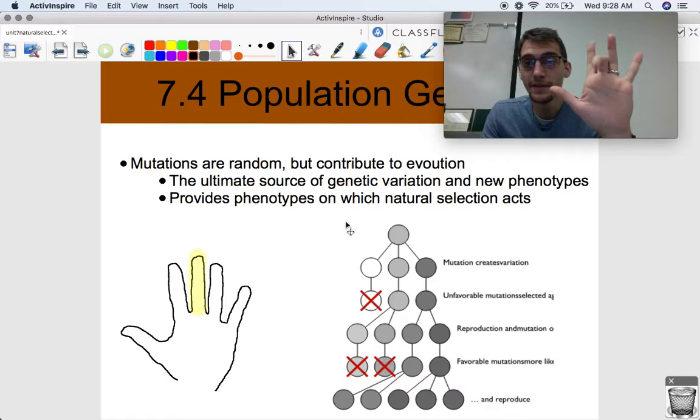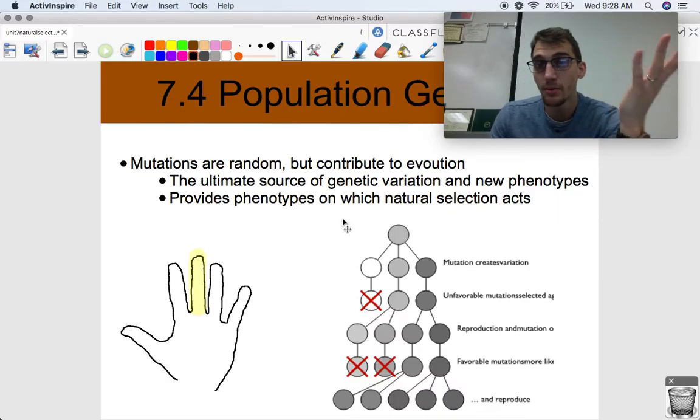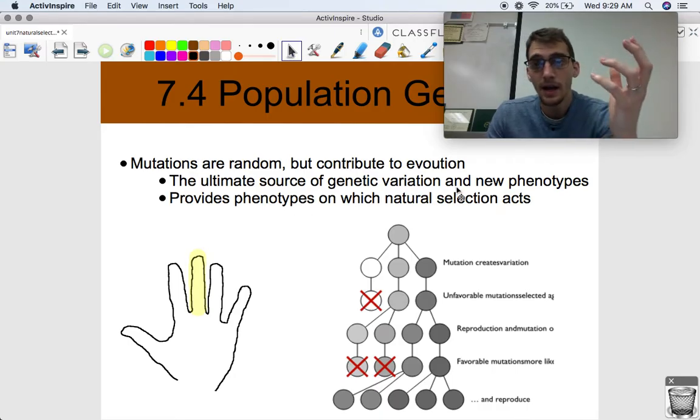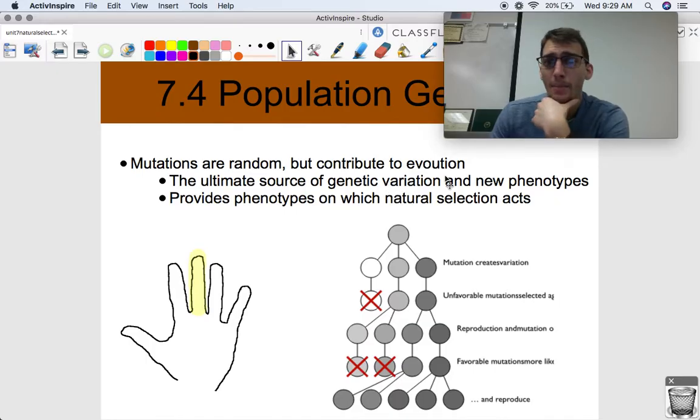Mutations. We use the middle finger to represent mutations because mutation and middle start with the same letter. But mutations drive changes in allele frequencies. They're the basis of genetic variation. And remember, genetic variation has to be there in order for natural selection to occur. But mutations themselves change allele frequencies. They change allele frequencies and introduce brand new alleles or brand new genes into a population that is ultimately going to change the allele frequency of a population. It's the ultimate source of genetic variation, new phenotypes, and it provides phenotypes on which natural selection acts. And they're random. Mutations happen by chance. Natural selection does not happen by chance.